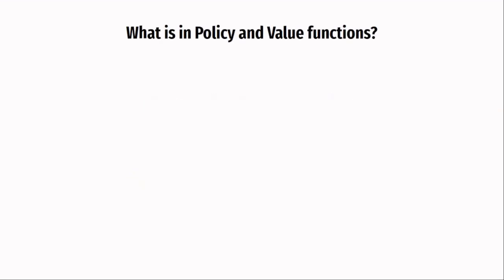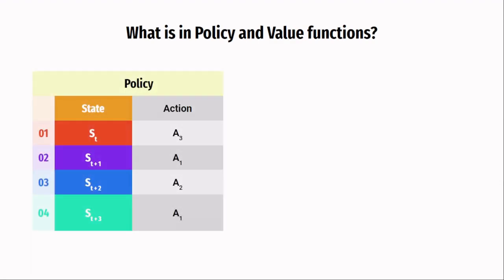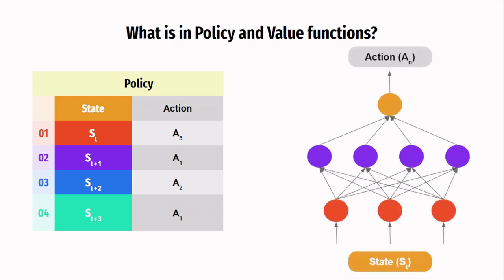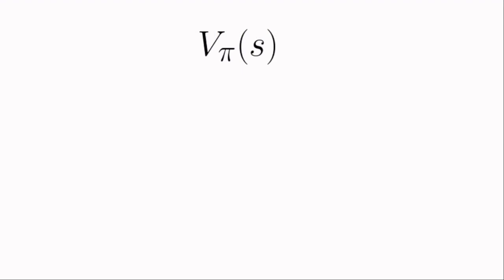What we have not talked about till now is what the policy and value function are made up of. These functions can be made using a table where for each state there is a row holding the corresponding data, or these functions can be made using function approximators like neural networks. Since early reinforcement learning methods used tables, we will start off with tables. For a fair amount of time I have been saying that the value for a state is calculated for a particular policy pi.